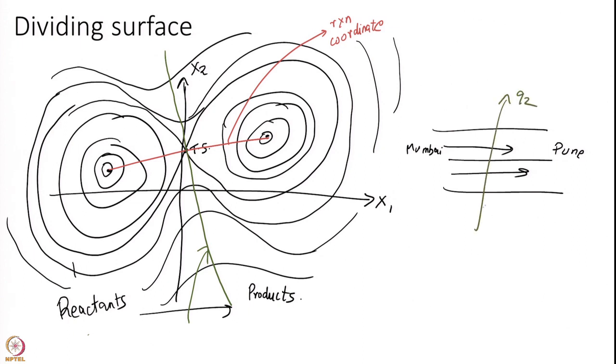This is my reaction coordinate and I am sitting at the transition state and if I draw a surface that is perpendicular to the reaction coordinate this is essentially my Q2. This was Q2 and this was Q1, this is my direction perpendicular to reaction coordinate. What I want to do is to do an integral over this green line effectively. I sit at transition state I find my reaction coordinate, I find the direction that is perpendicular to my reaction coordinate and I integrate over that. I find the flux of my trajectories going from reactant to product across this green line. That is what I have to calculate.